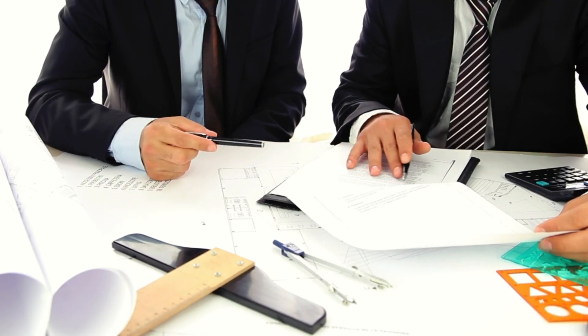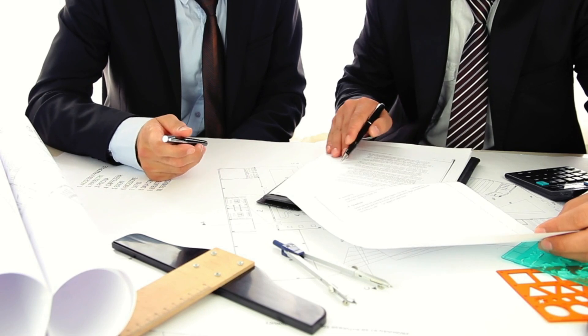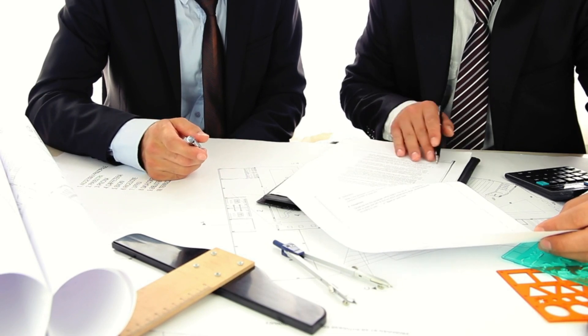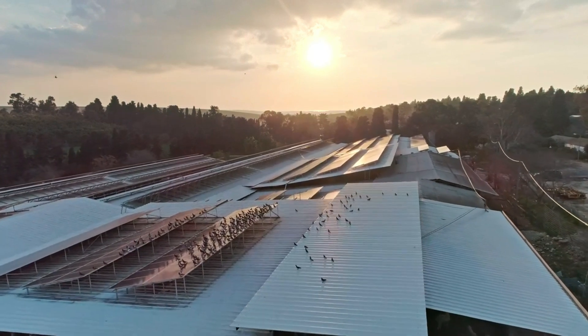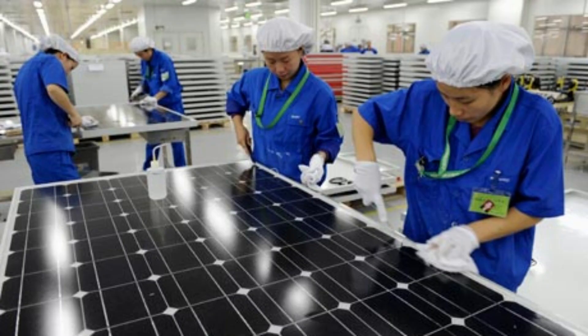These signs included the fluctuation in polysilicon prices, the panels' inability to work with residential roofing systems or in large solar farms, which represent a significant portion of the solar market, and increasing competition from China and Taiwan in manufacturing capabilities.